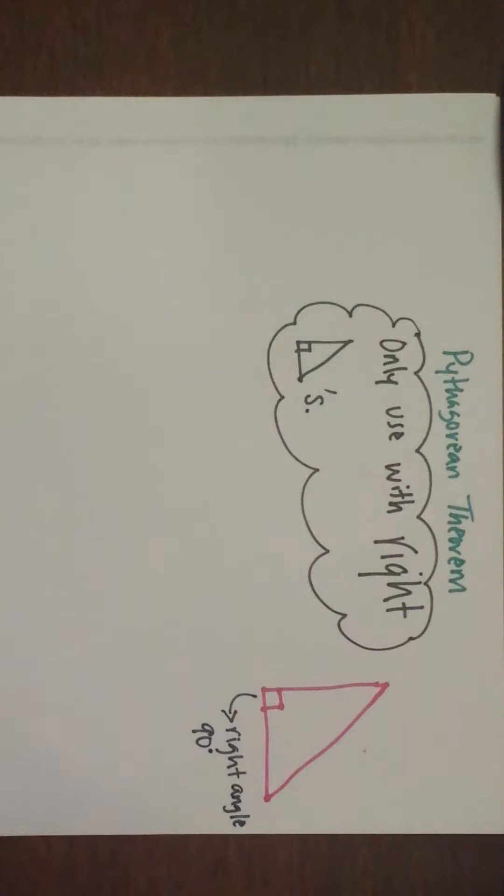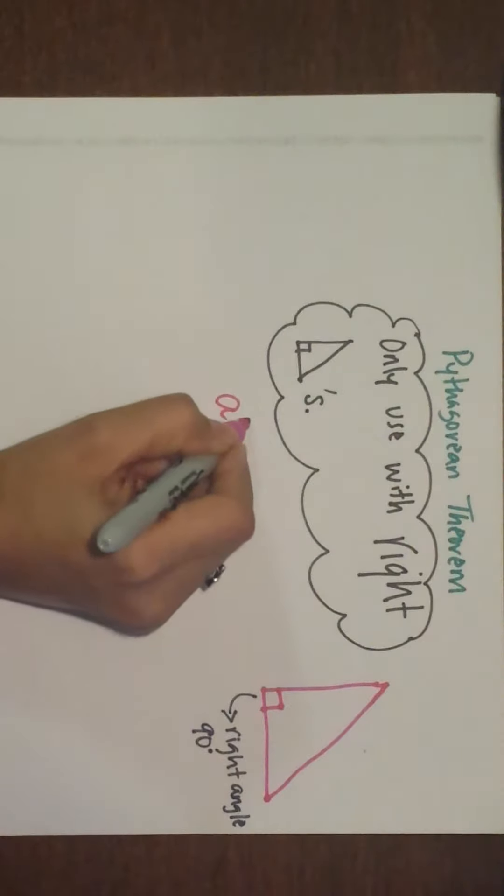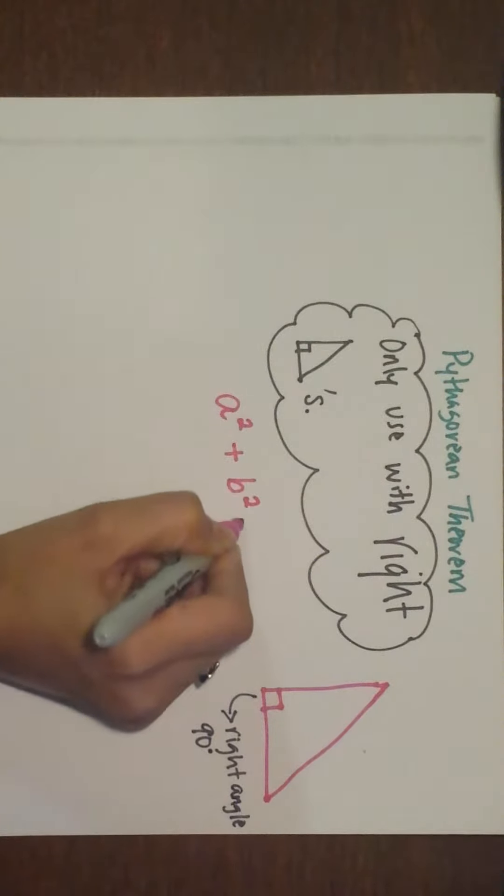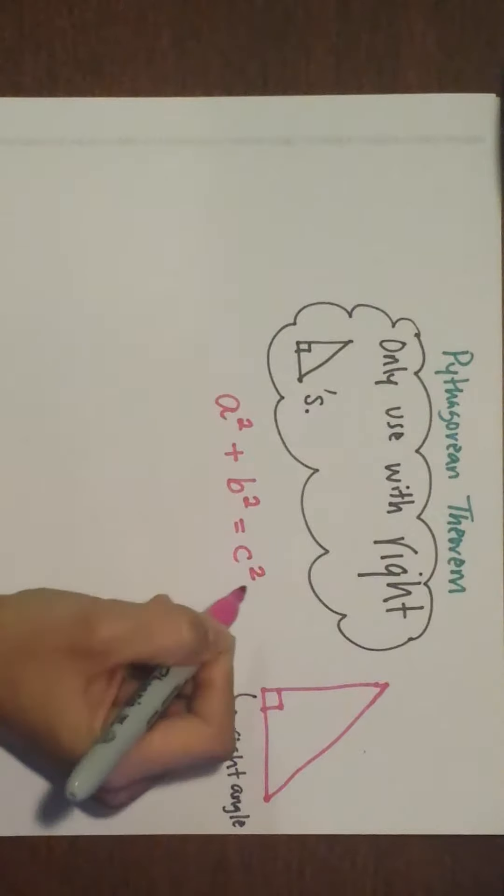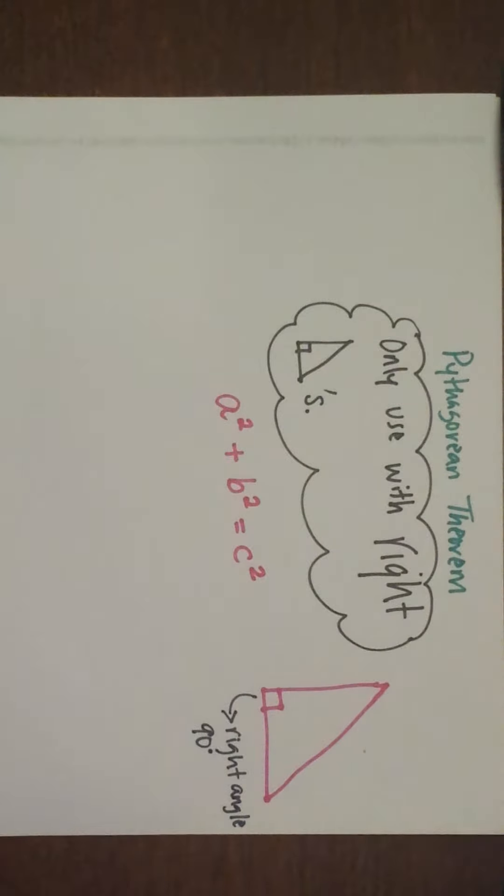Now the biggest thing that you need to know with your right triangle is that a squared plus b squared equals c squared. Again, this is just a review. You should already know it, but I'm not going to assume anything.